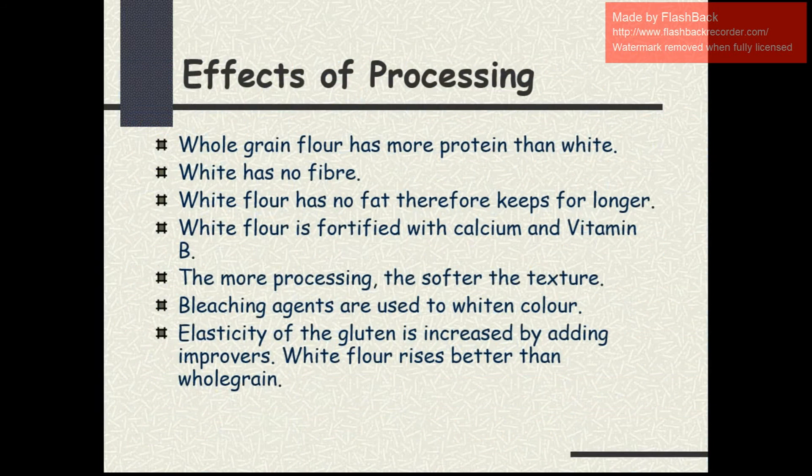Regarding the effect of processing: whole grain flour has more protein than white flour. White flour has no fiber and no fat, therefore you can keep it for a longer period. White flour is fortified with calcium and vitamin B. The more processing, the softer the texture. Bleaching agents are used to whiten the color. Elasticity of the gluten is increased by adding improvers. White flour rises better than whole grain.